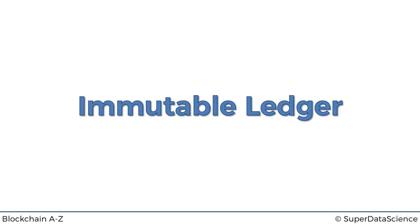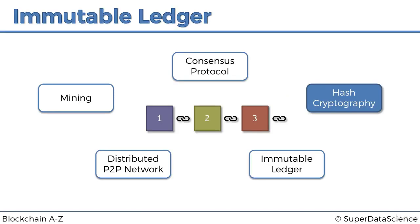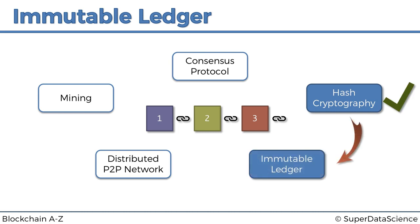Hello and welcome back to the course on blockchain. Today we've got an exciting tutorial — we're going to be talking about the immutable ledger property of blockchains. Here's our map: previously we spoke about hash cryptography, and today we're moving on to the immutable ledger.